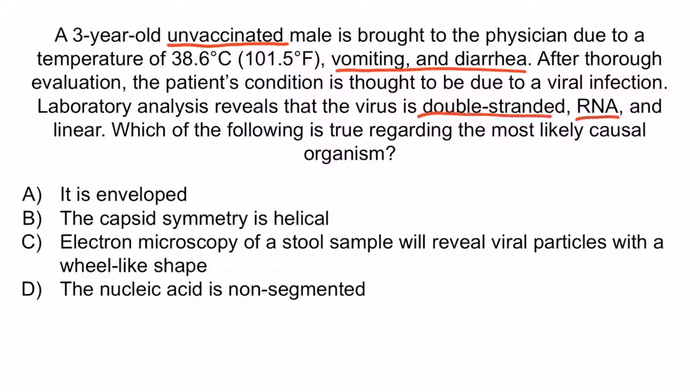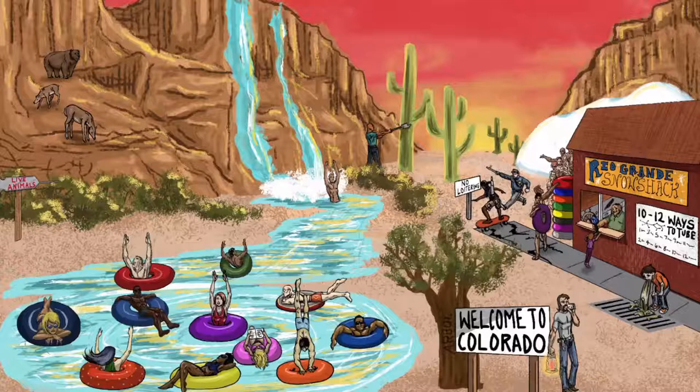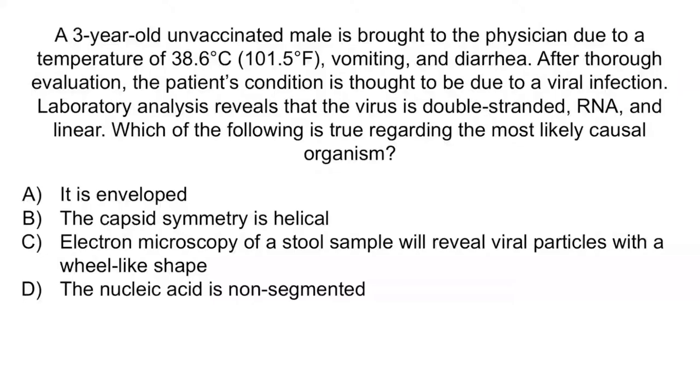From the question stem, note that this patient is unvaccinated and presenting with vomiting and diarrhea. Laboratory analysis tells us the virus is double-stranded RNA and linear. Remember, anytime you see a double-stranded RNA virus, you should immediately think of Reoviruses. Because the patient has gastroenteritis, we can deduce that the most likely causal organism is Rotavirus, a member of the Reoviruses. The correct answer is C: electron microscopy of a stool sample will reveal viral particles with a wheel-like shape. A is incorrect because Reovirus is naked. B is incorrect because capsid symmetry is icosahedral. D is incorrect because Reoviruses have 10 to 12 segments, so they are segmented.